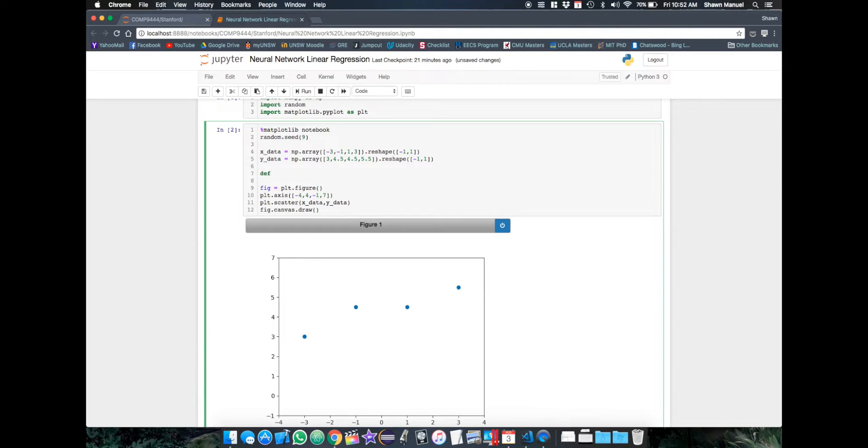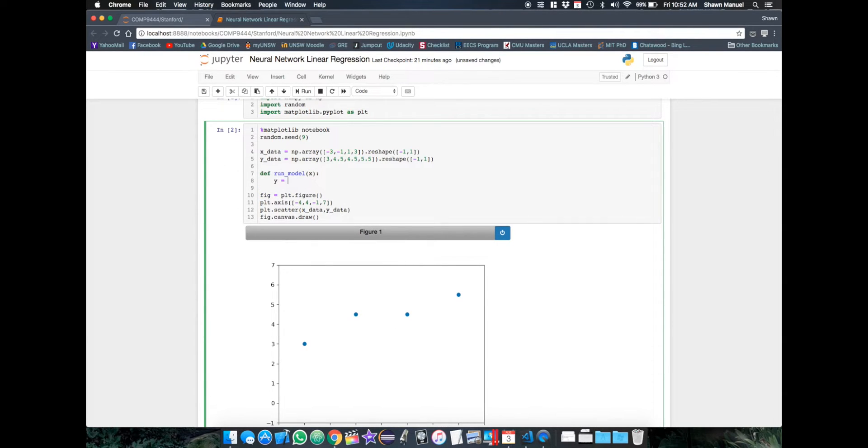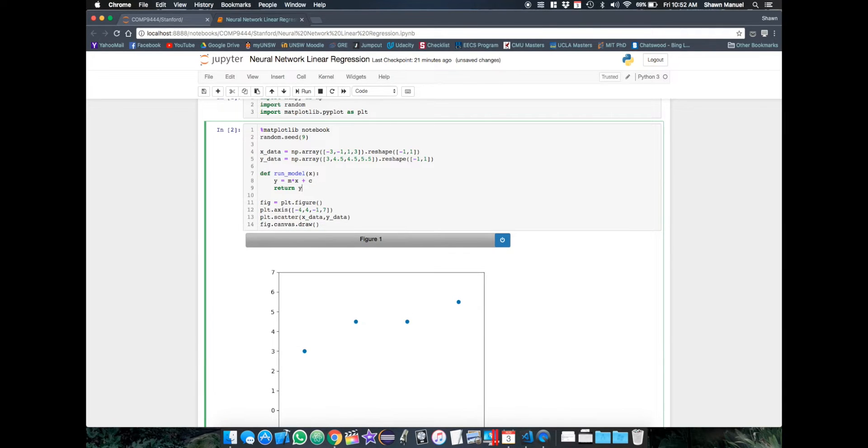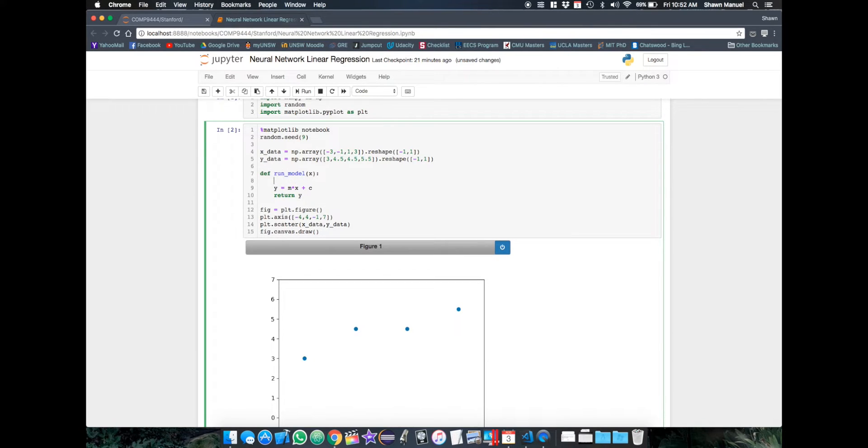So let's actually define our neural network as a function called runModel, which transforms an input x to an output value y. Now m and c are the weight and bias parameters of a model that we will be tweaking later on. So we will assume that they are going to be global variables for now.